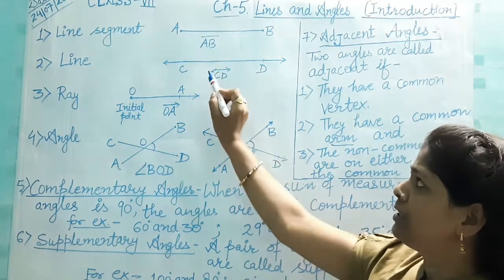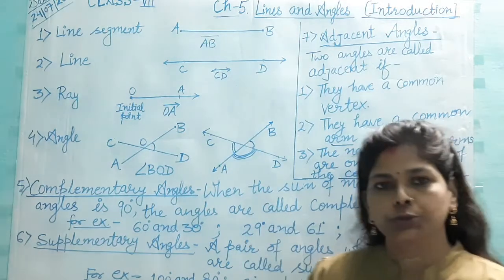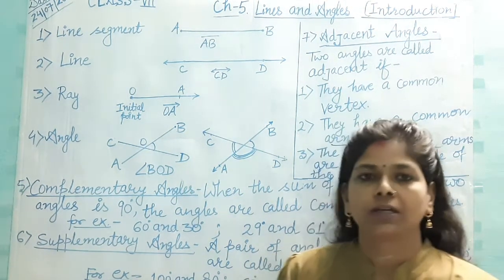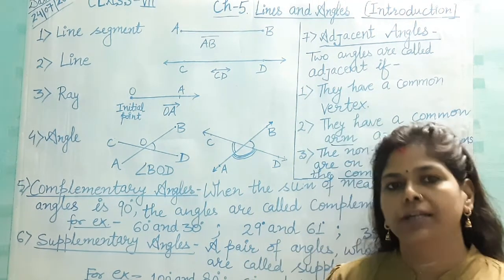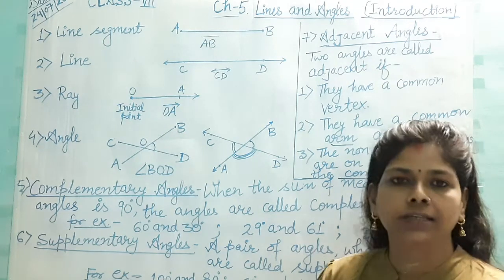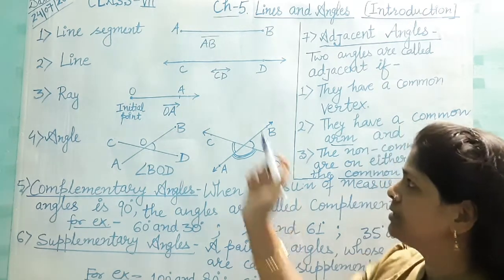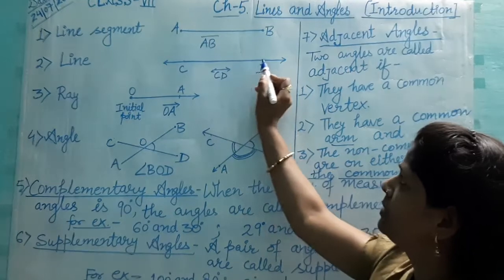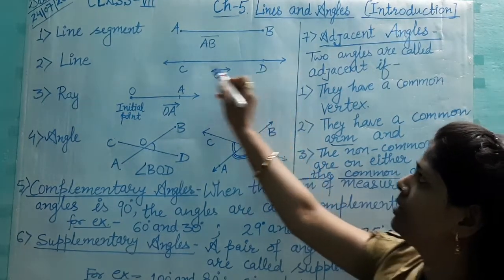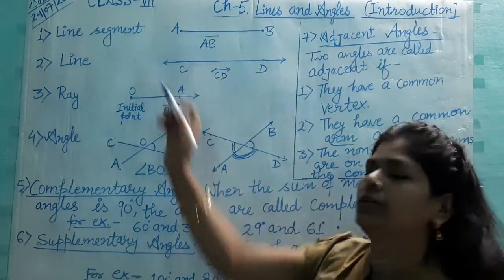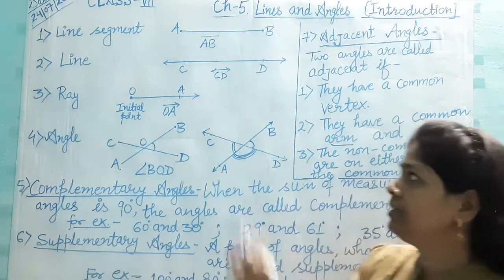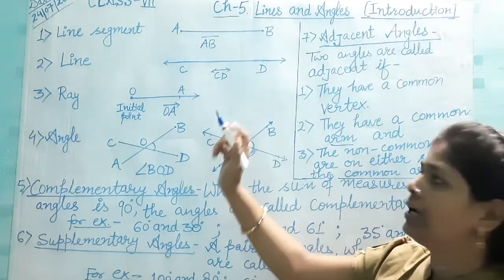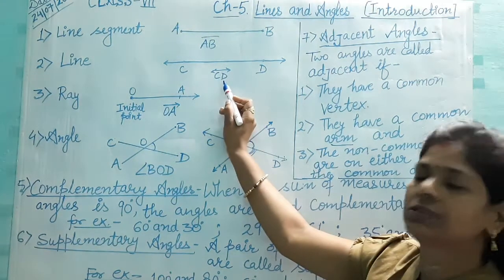If in a line segment we extend it in both directions indefinitely or endlessly, then it is a line. CD is a line segment. We extend it here and here in both directions, and then it is a line, named as line CD.